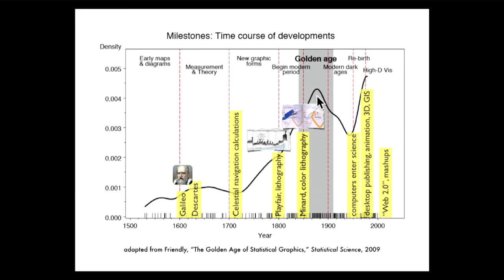There was kind of a peak — this golden age of visualization — and then things started going really bad. Computers entered science around here. There used to be draftspeople who made graphics for you and they were really good at it; they had a certain craftsmanship and aesthetic. Computers did not have that, and computer visualization was very ugly for quite some time. But what's happened recently is that it's become possible to take tools made by people who are really good at both sharing information quantitatively and being very visual, and mash them up.